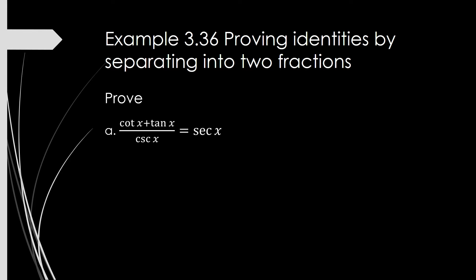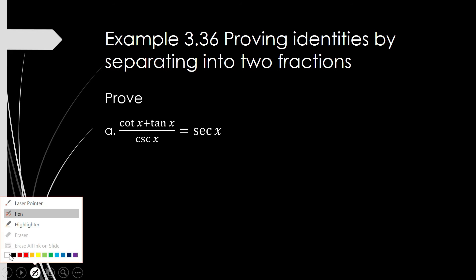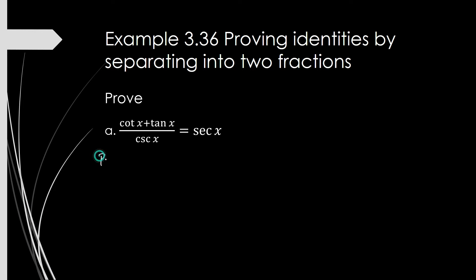So prove this: cotangent of x plus tangent of x divided by cosecant of x is equal to secant of x. To begin your proof, you will write the word proof.